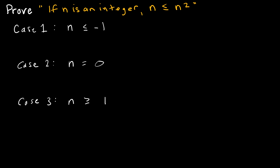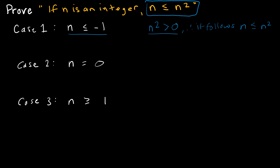Now that we know our three cases, let's go about making this proof happen. Case 1 says n is less than or equal to negative 1. Keep in mind, what I'm looking for each time is to show that n is less than or equal to n squared. So what happens if I have a negative value? If I have a negative value and I square it, n squared is always going to be positive, because a negative times a negative is a positive. Therefore, it follows that n is less than or equal to n squared, because n squared is positive and n is clearly negative.